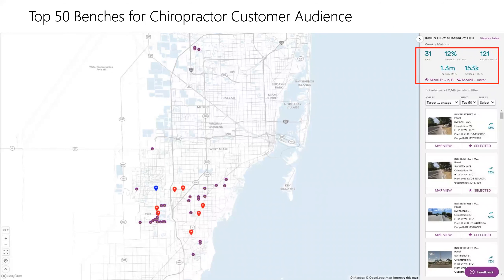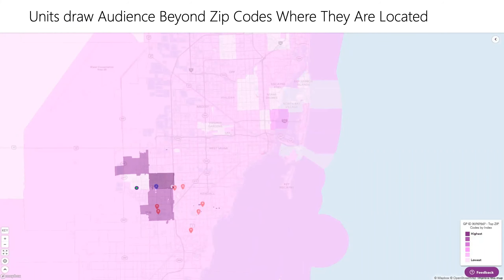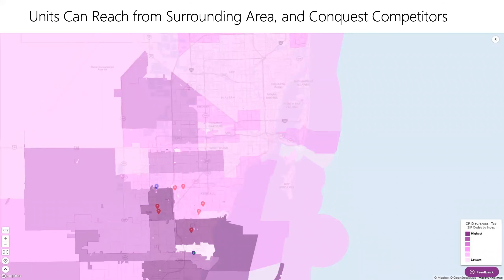Here's another example where a unit — for people who've been to a chiropractor in the last 12 months — is delivering so much more based on audience. Once again, the top four zip codes where the audience is drawing from is more than what you're seeing at the unit location. You're not only getting that target consumer profile, but you have more audience added to it. And it's really interesting: the heavy zip codes are drawing audience from places right around Fisher Chiropractic as well as some of the competitors. The units could reach beyond the location and conquest the competitors. It's another part of the conversation — local salespeople know their market inside and out and will be able to talk more to that story.